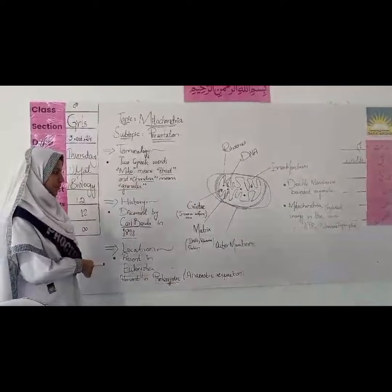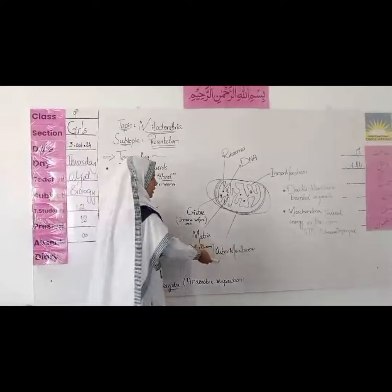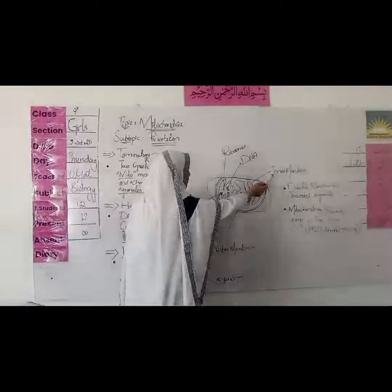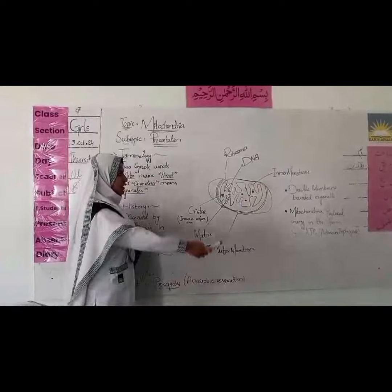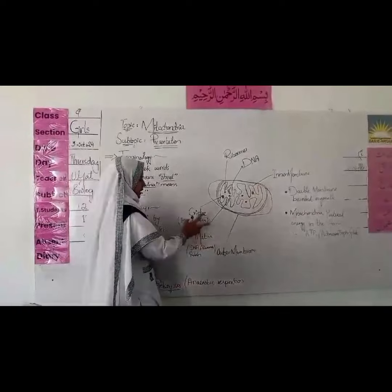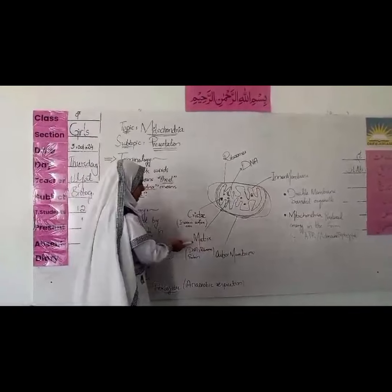It is separated by membranes. It has two membranes: outer membrane and inner membrane. The outer membrane is smooth and the inner membrane has three parts — three states and matrix.